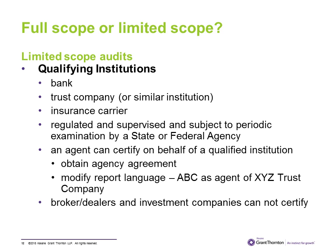An agent can certify on behalf of a qualified institution; in this case the plan sponsor needs an agency agreement, and the certification language should specify 'ABC as agent of XYZ trust company.' Importantly, broker-dealers and investment companies are not qualified certifiers. There is sometimes confusion because some investment companies have subsidiary trustees that provide the certification — for example, Fidelity is an investment company but has an affiliate that provides trustee services.